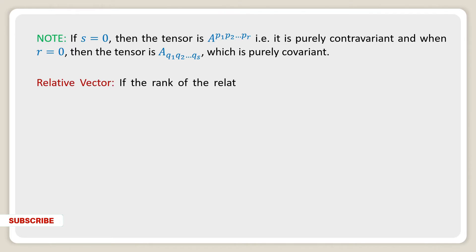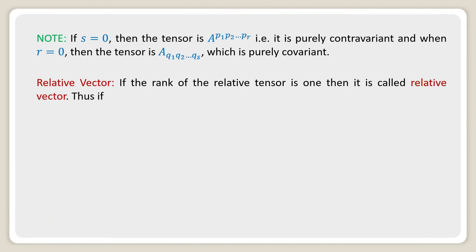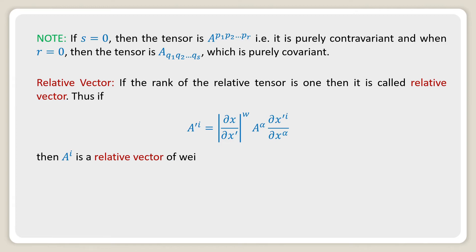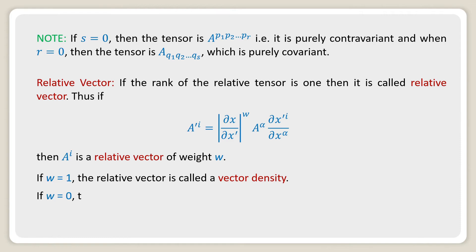Relative Vector. If the rank of the relative tensor is 1, then it is called a relative vector. Thus if a'^i equal to the Jacobian of (del x / del x') to the power w into a^alpha (del x' i / del x alpha), then a^i is called a relative vector of weight w. If w equal to 1, the relative vector is called a vector density. If w equal to 0, the relative vector is called an absolute vector.